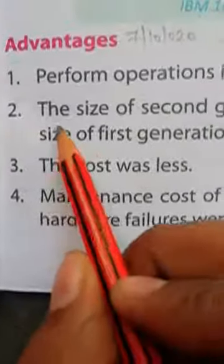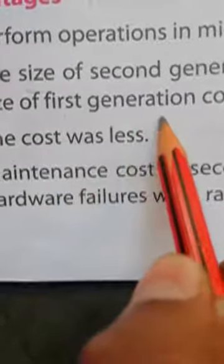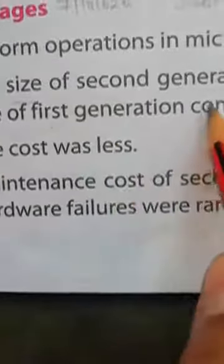The size of second generation computers was small compared to the size of first generation computers. Size means aakar. Second generation means दोسری PD. Small means छोटा. Compared means तुलना में. First generation means पहली PD. पहली PD के computer के आकार की तुलना में, दूसरी PD के computer का आकार छोटा था.